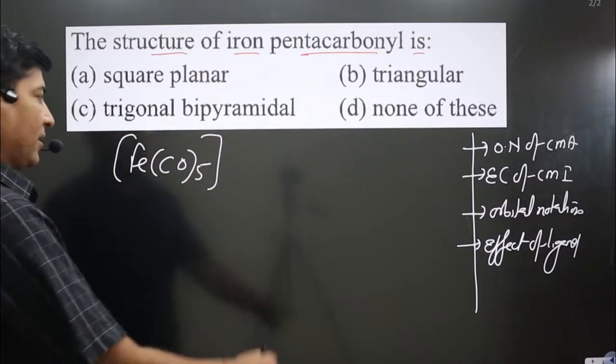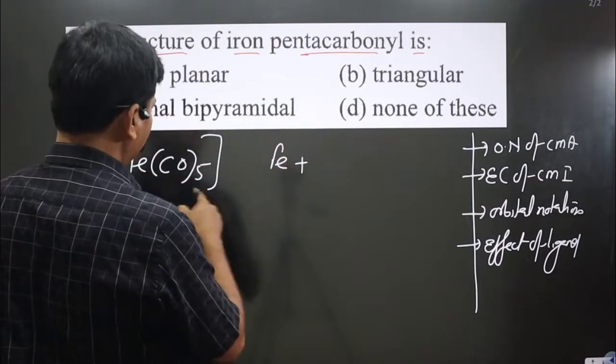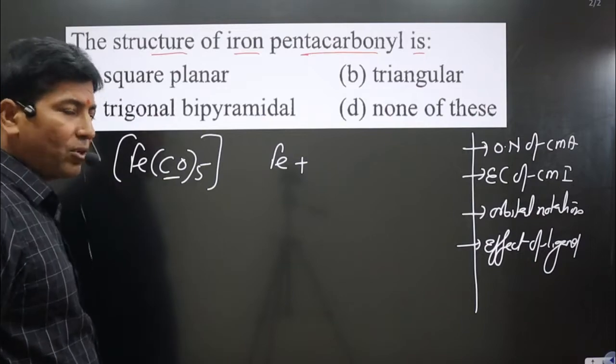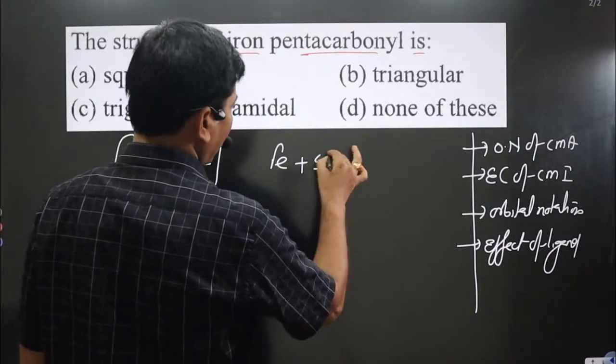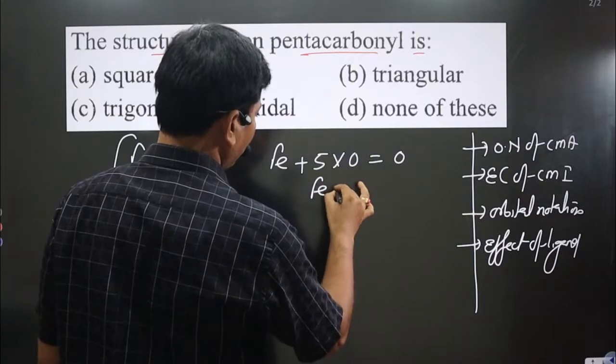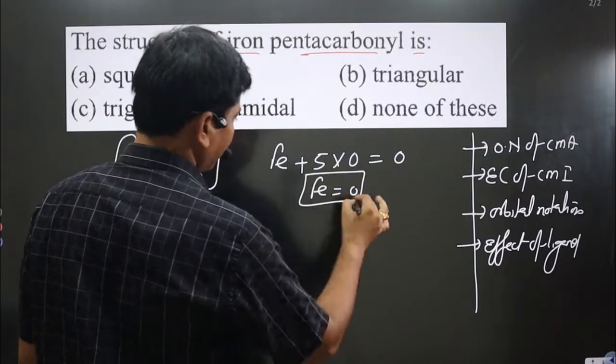Now we calculate the oxidation number of the central metal atom. Iron plus the neutral ligand carbonyl group, 5 multiplied by 0, and overall charge is 0. So Fe is present in 0 oxidation number.